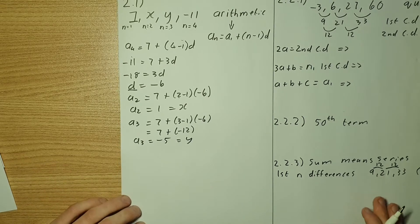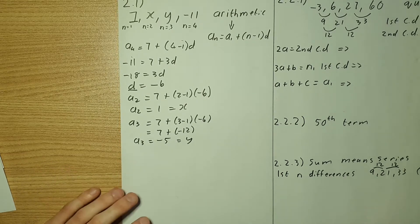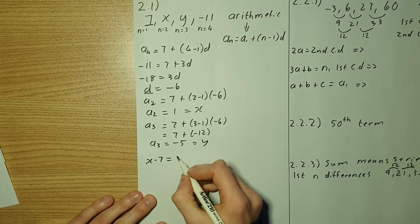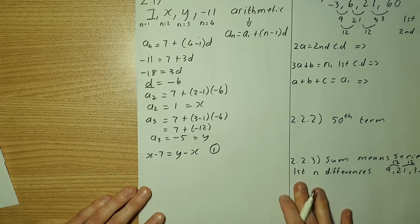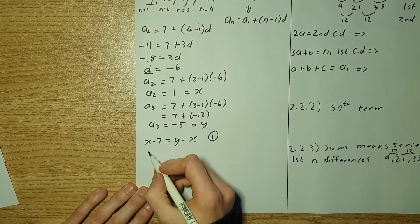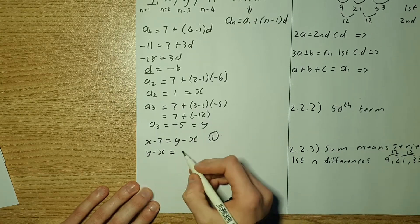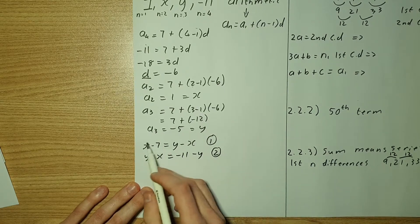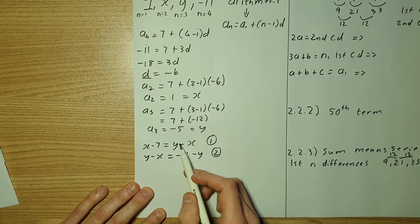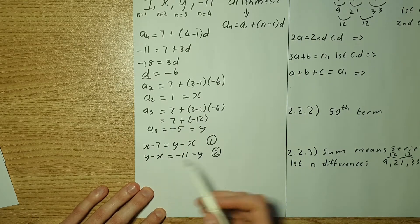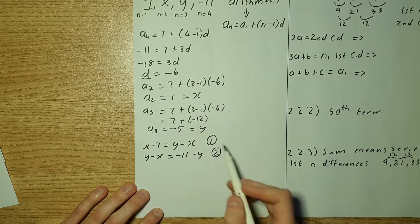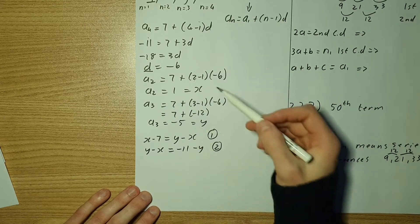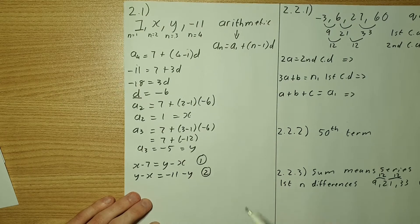The other way you could have gone about this is to set up a simultaneous equation. You say x minus 7 must equal y minus x as your first equation, and y minus x must equal negative 11 minus y as your second equation. By making one of them the subject and substituting into each other, you'll find that x equals 1 and y equals negative 5.